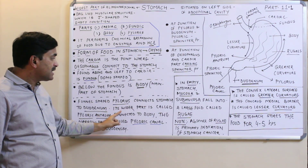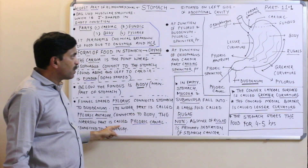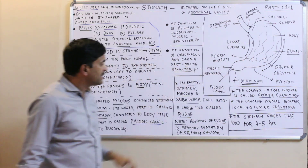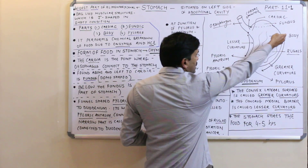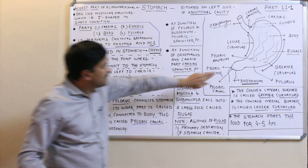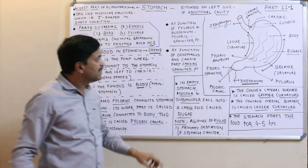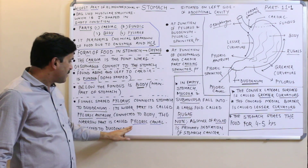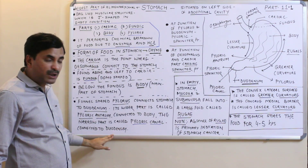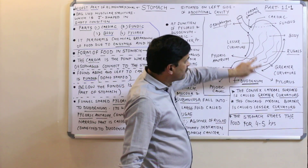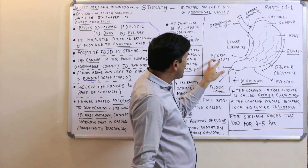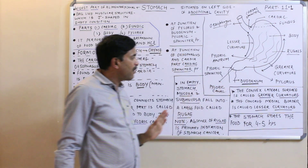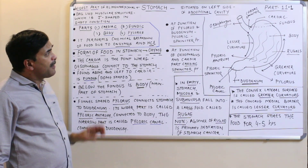The wider part of the pylorus is called the pyloric antrum, which is connected to the body of the stomach. The narrow part of the pylorus is called the pyloric canal, and it is connected to the duodenum. So the broad part connected to the body is the pyloric antrum, and the narrow part connected to the duodenum is the pyloric canal.